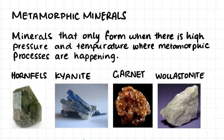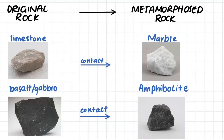These metamorphic minerals only form when there is high pressure and temperature, associated with metamorphic processes. They include hornfels, kyanite, garnet, and wollastonite. Metamorphic rock forms when we apply heat and pressure to some sort of igneous or sedimentary rock. Here are a few of the main examples of metamorphic rock that form from their original rock.